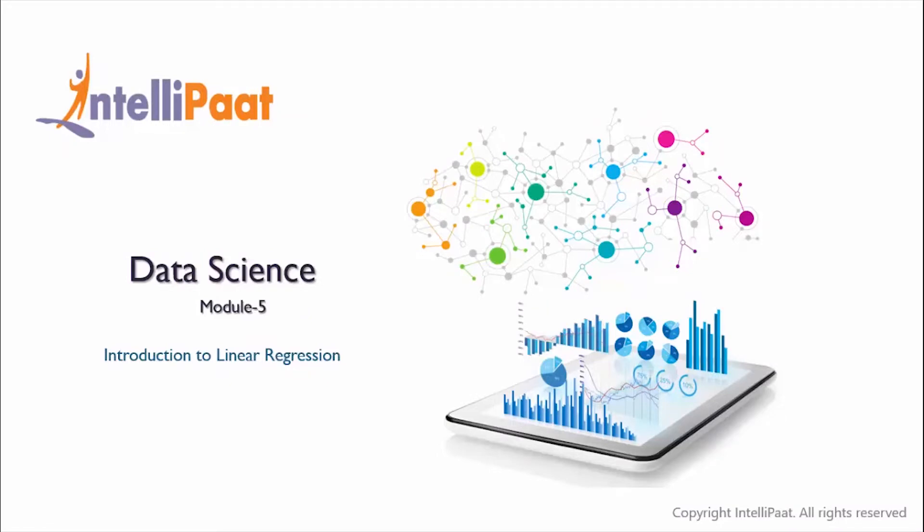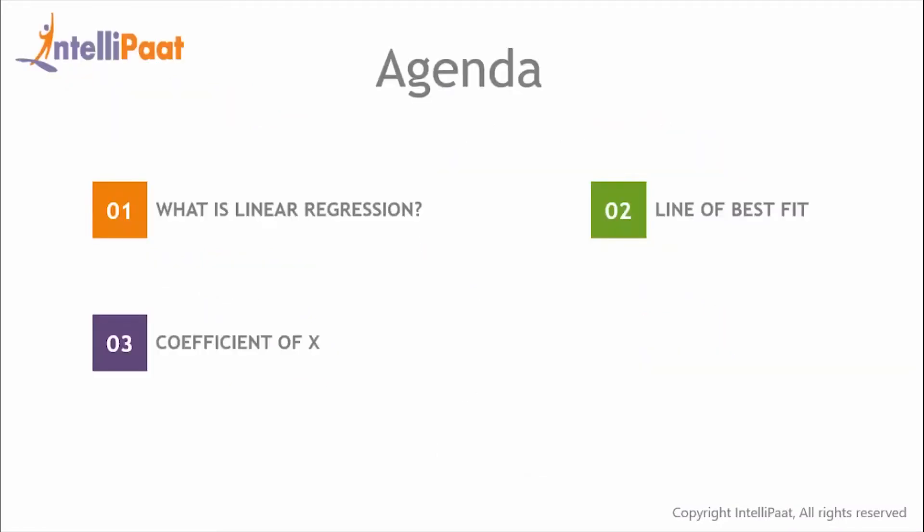Hey guys, welcome back to the data science course. In today's session, we'll start off by understanding what exactly is linear regression, then we'll learn how to find the line of best fit, and finally we'll explore how the coefficient of the independent variable influences the relationship between dependent and independent variables.